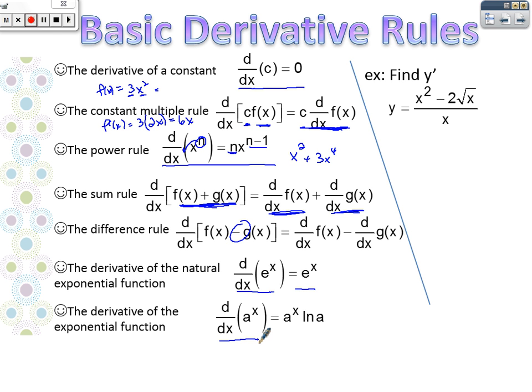Then we have the derivative of a to the x. This would be, for example, if I wanted to take the derivative of 2 to the x. If I wanted to do the derivative of 2 to the x, what I would do is I would get 2 to the x, and then I would multiply by ln 2. And that would be my derivative,